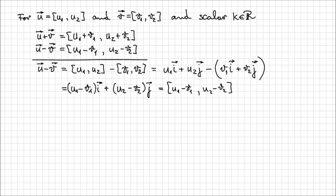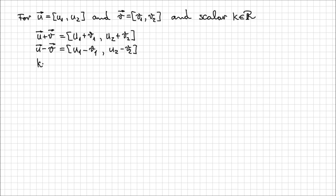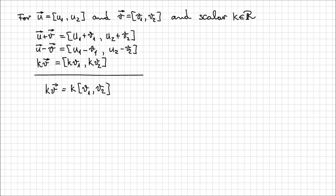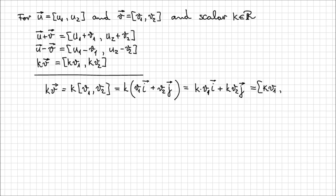Now what happens if we have a vector multiplied by a scalar? Well, k times v equals [k·v1, k·v2]. So each component — horizontal and vertical — is multiplied by this scalar. We can prove this just like before: kv, expressing v as [v1, v2], or using unit vectors, k(v1·i + v2·j). This is just simple algebra, giving kv1·i + kv2·j, and once again this gives you the vector [kv1, kv2], just as stated in the formula.